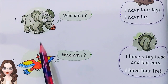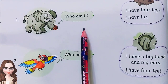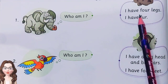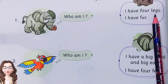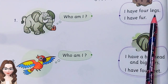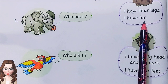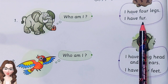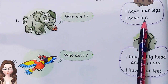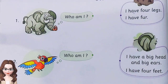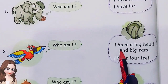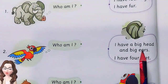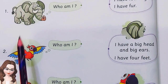Here it says: who am I? We will read and see. I have four legs. I have four legs — is it an elephant? No, it's not the elephant yet. I have a big head and big ears.